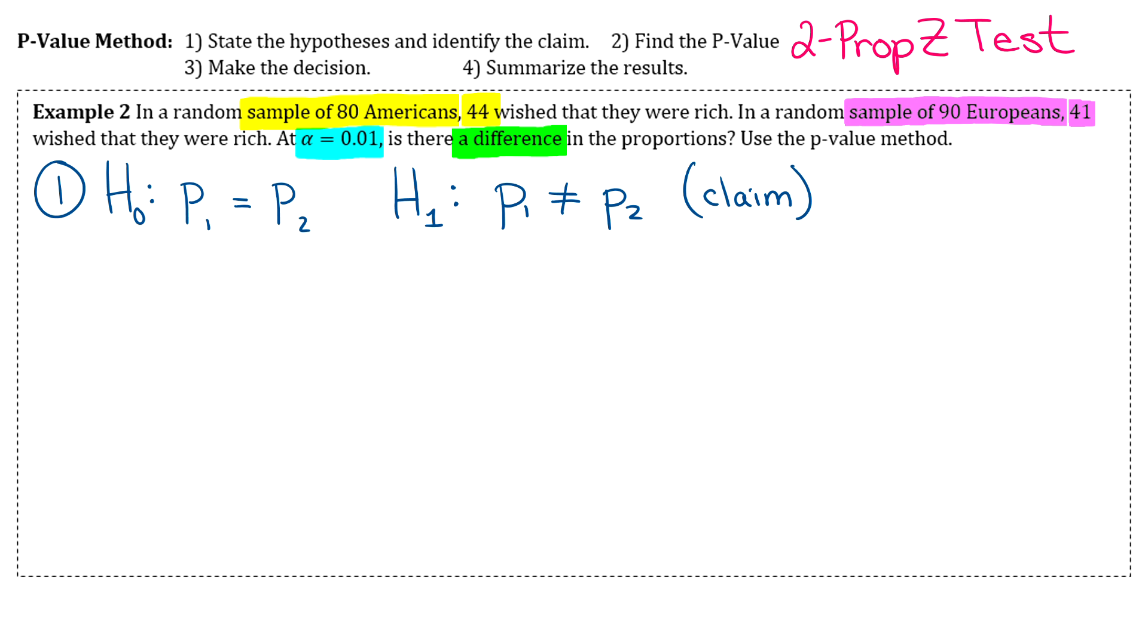For step two you're just going to go to two proportions Z test, and it's going to ask you for some different things here.